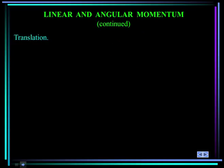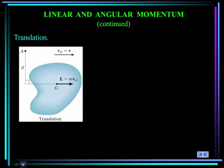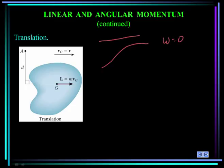Let's go over some special cases. The first is translation. When a rigid body undergoes rectilinear or curvilinear translation, its angular momentum is equal to zero because omega is zero. The body can be translating in a straight line or in a curved line, but as long as omega equals zero, the angular momentum is zero. The linear momentum is still the mass times the velocity of the mass center.